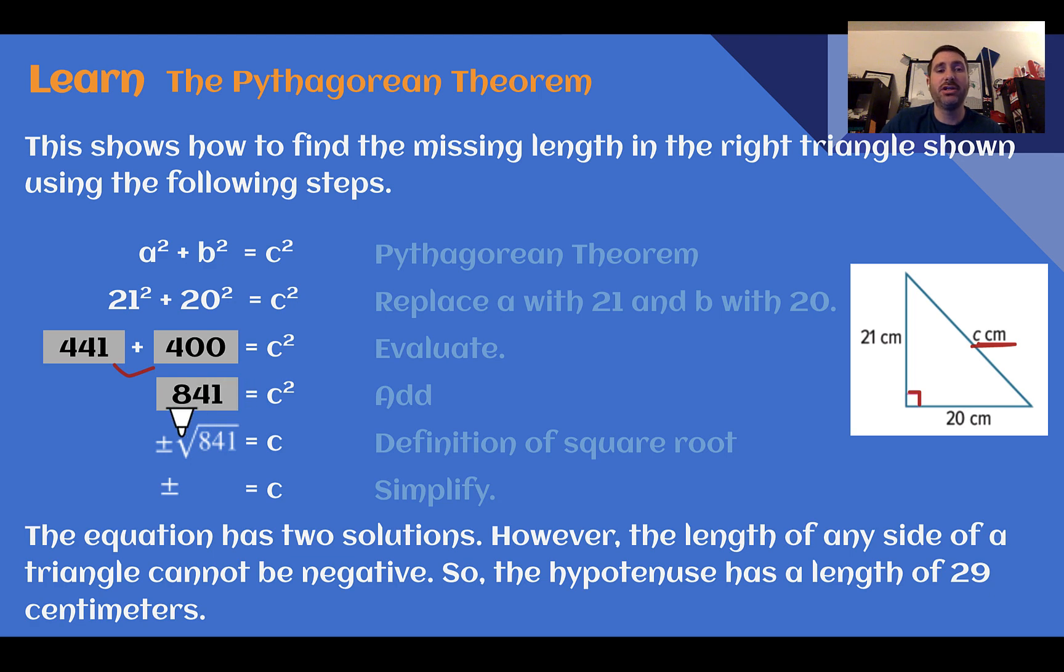So the square root of 841 is 29, meaning this side here would be 29. We learned in a previous module that taking the square root gives you a positive and a negative version of the same number, so plus or minus 29. But since we're talking about length, length can't be negative, so we would just kind of ignore the negative solution. This triangle has a hypotenuse length of positive 29 centimeters.